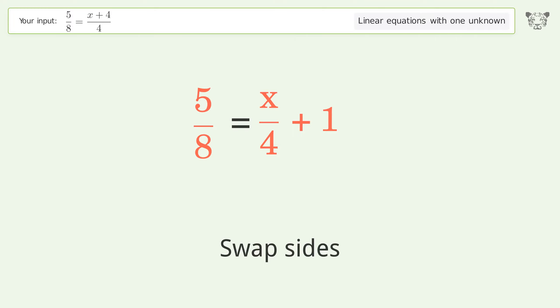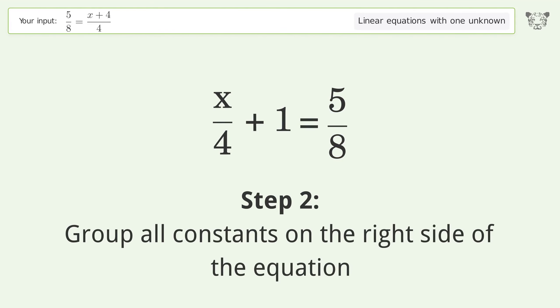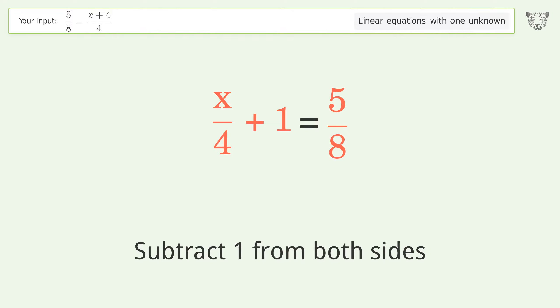Swap sides. Group all constants on the right side of the equation. Subtract 1 from both sides.